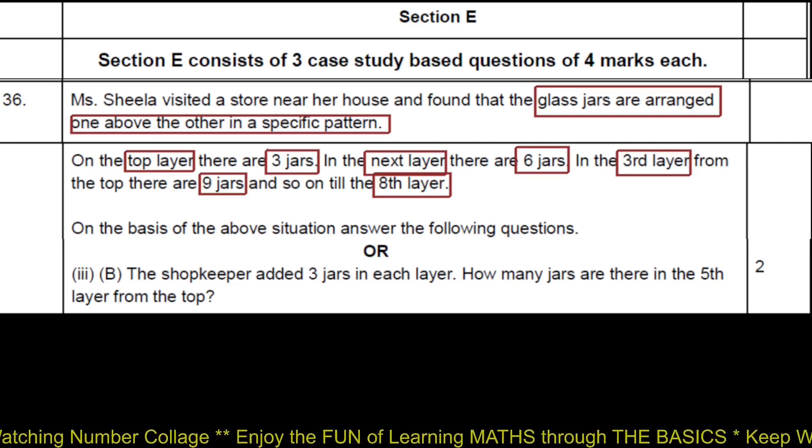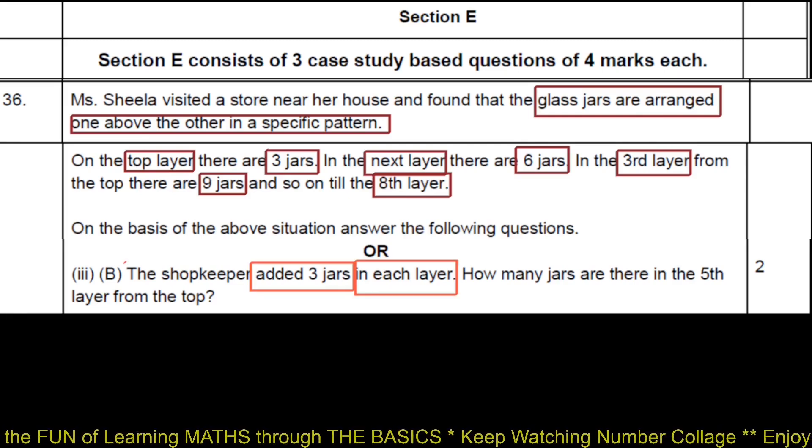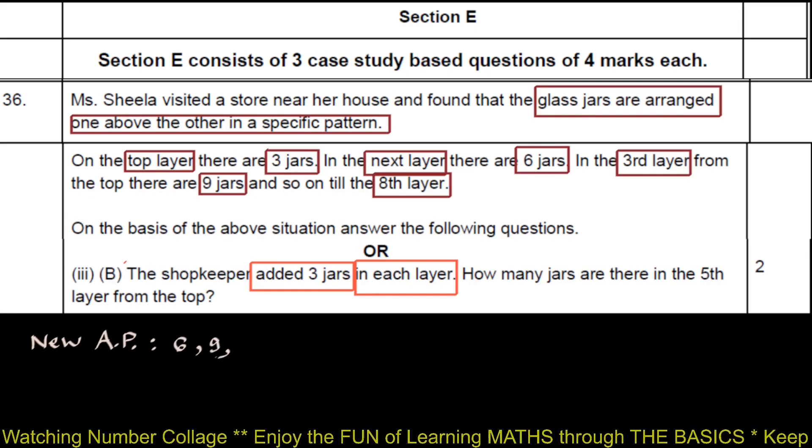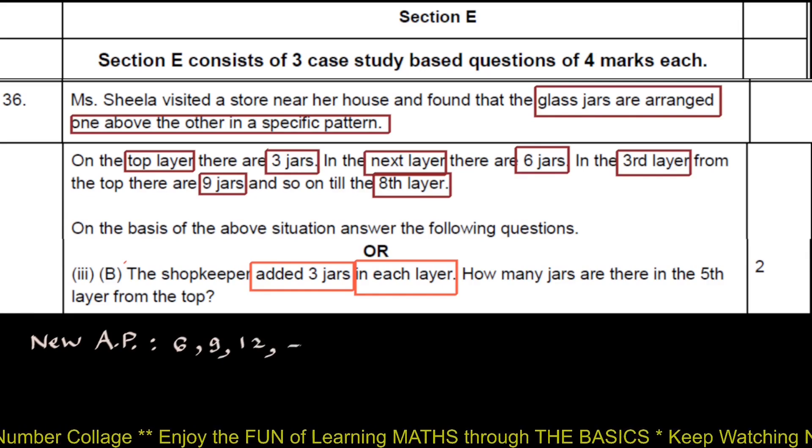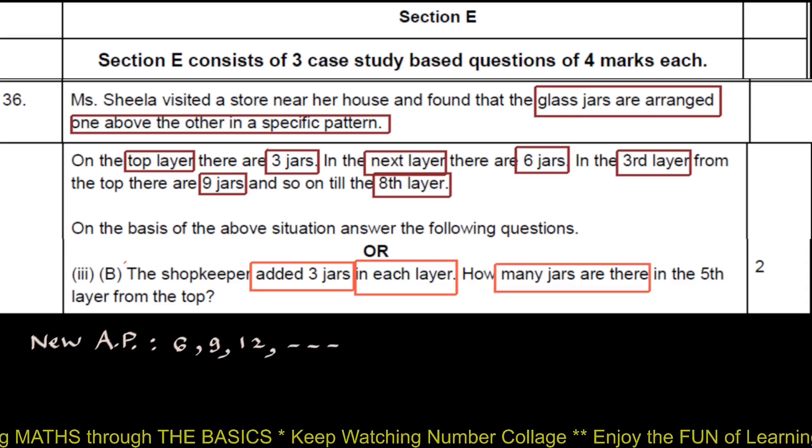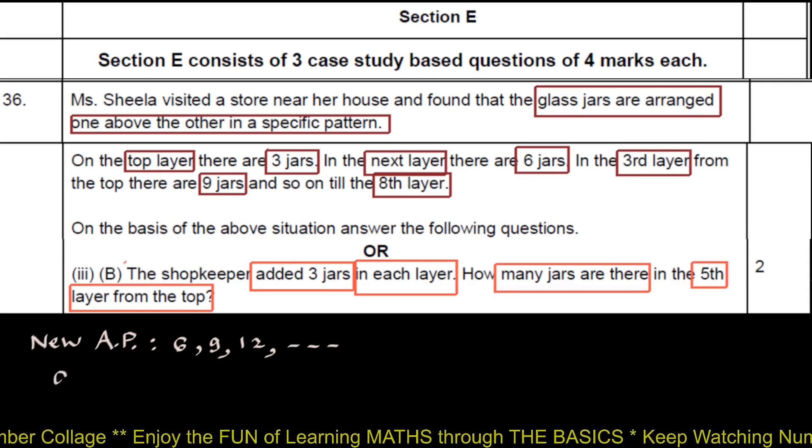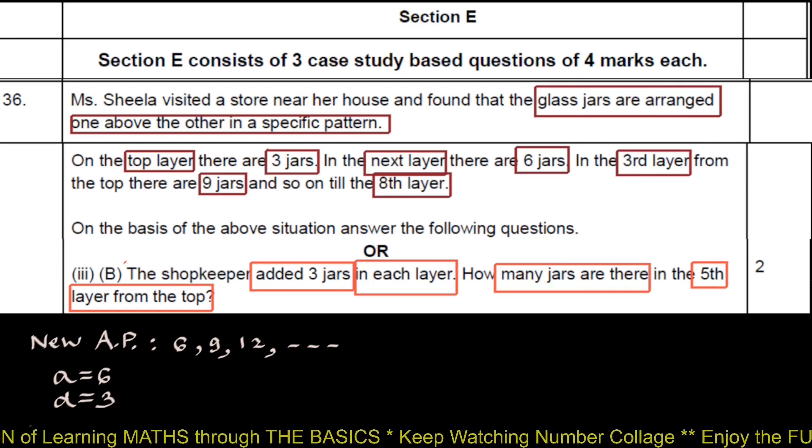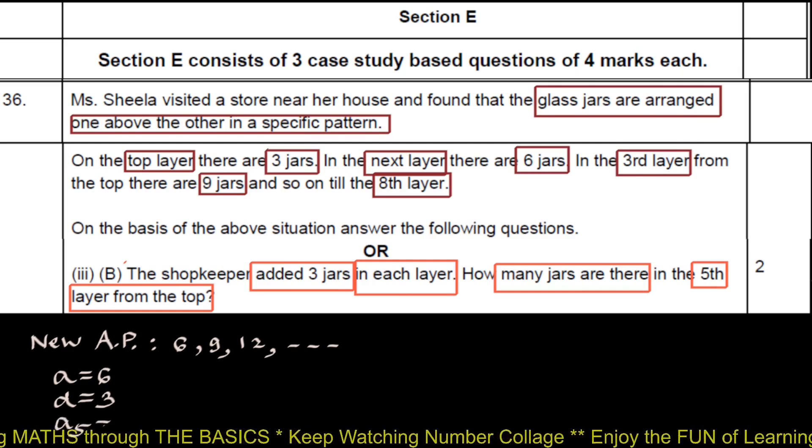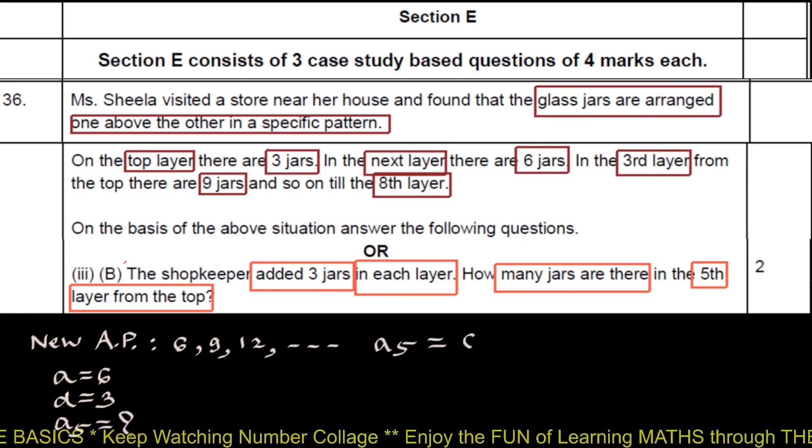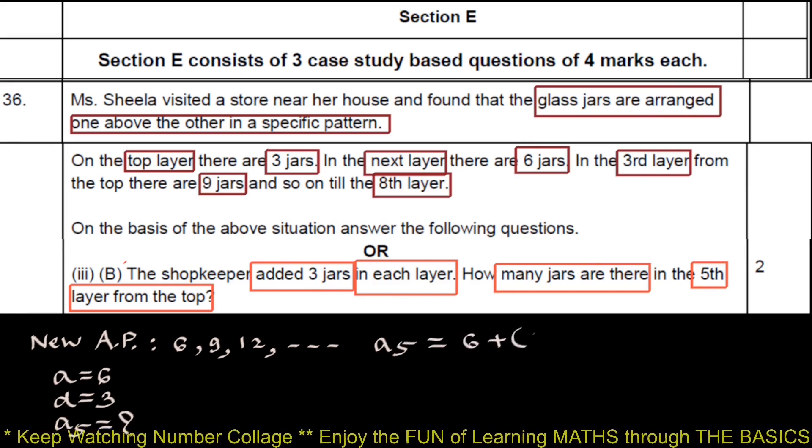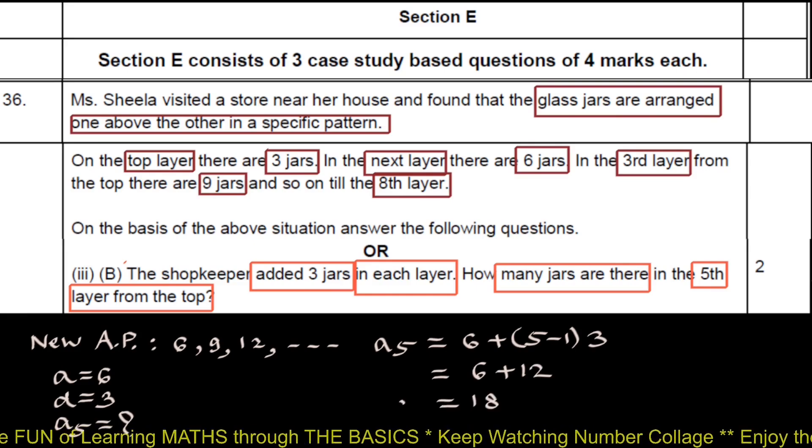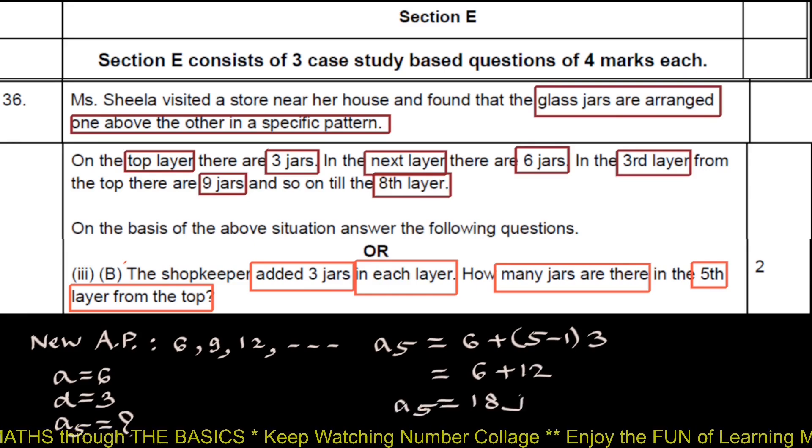The shopkeeper added 3 jars in each row, which means the new AP now is 3 plus 3 equals 6, 6 plus 3 equals 9, 9 plus 3 equals 12, and so forth. How many jars are there in the fifth layer from the top? Here A is 6, D is 9 minus 6 equals 3, and number of jars in fifth row means we have to find A5. We have A5 equals A which is 6 plus N minus 1, 5 minus 1, into D which is 3, gives 6 plus 12 equals 18. So in the fifth row there will be 18 jars.